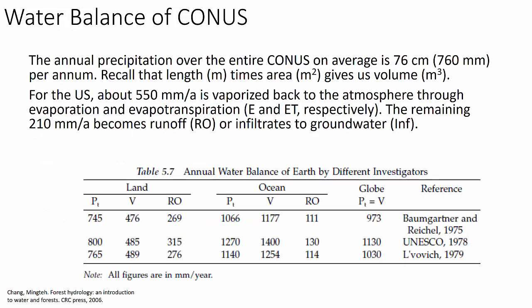The annual precipitation over the entire continental United States (CONUS) on average is 76 centimeters — 760 millimeters per year. That length of 760 millimeters or 0.76 meters times area in square meters gives us volume in cubic meters. This is a fundamental unit conversion: L times L² gives you L³, which is the unit of volume. That's how we come up with those globe representations of water volume on planet Earth shown in earlier lectures.